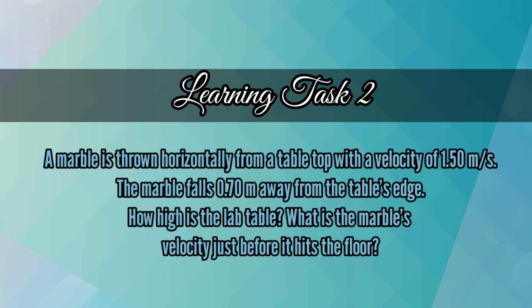For your learning task number 2, you are going to answer this given problem. A marble is thrown horizontally from a table top with a velocity of 1.5 meters per second. The marble falls 0.70 meters away from the table's edge. How high is the lab table? What is the marble's velocity just before it hits the floor?